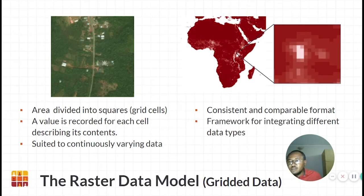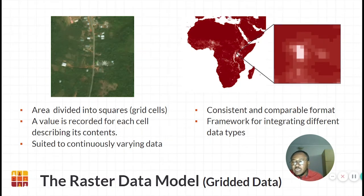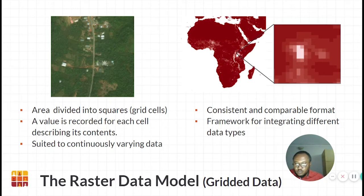The raster data model divides any given area into grid cells of equal size. The size of the cell is referred to as the resolution of the raster and determines how many features can be displayed or described. Raster data includes satellite or aerial imagery and grid datasets. In any raster, a value is recorded for each grid cell describing its content. In satellite or aerial imagery, this value is simply a color value so the screen can render it. For grid data, however, the cell value can be any type of continuous data such as elevation, temperature or vaccination coverage.